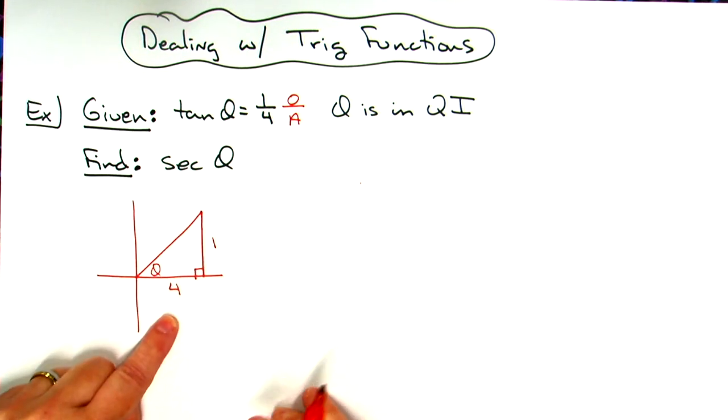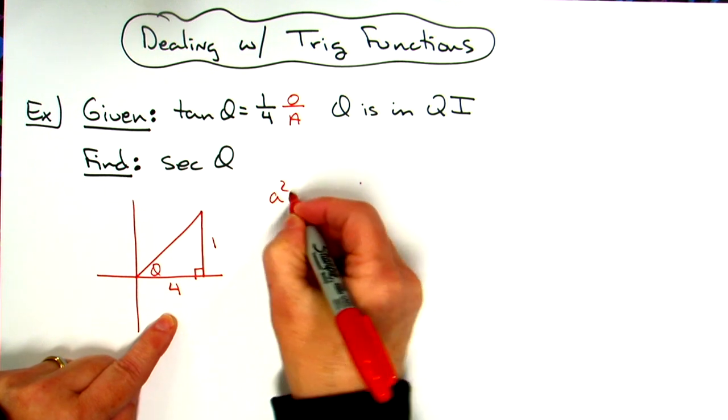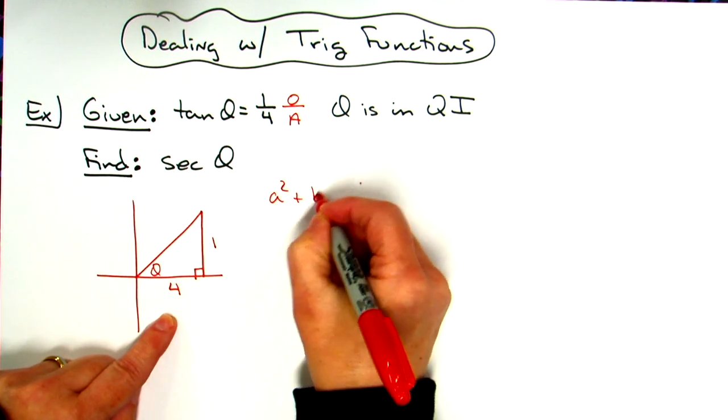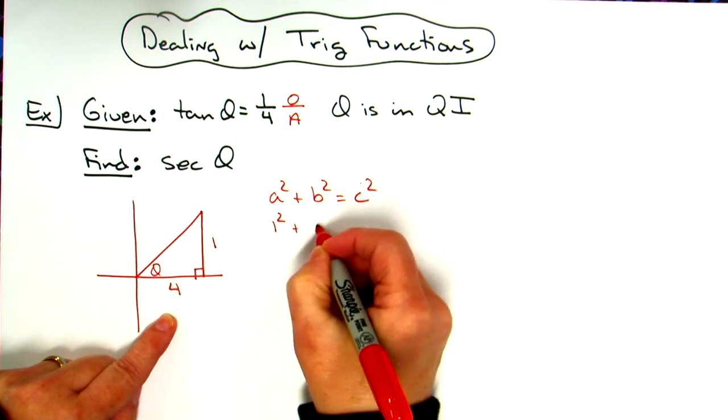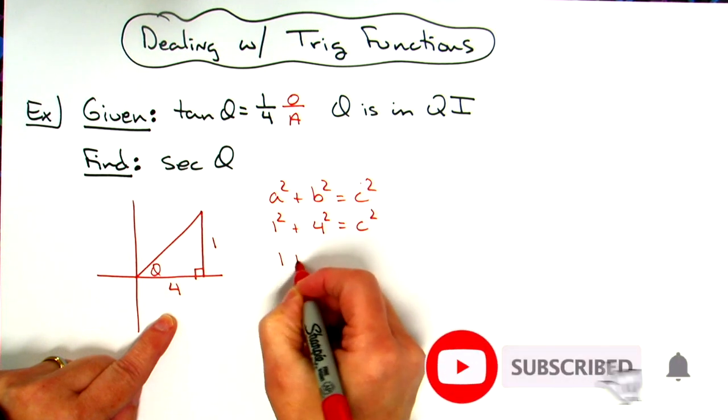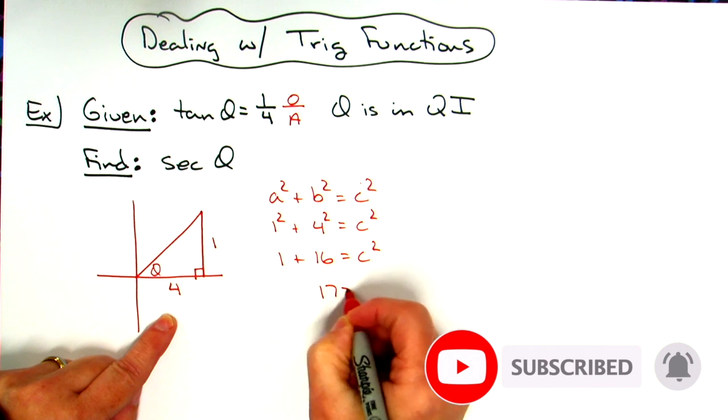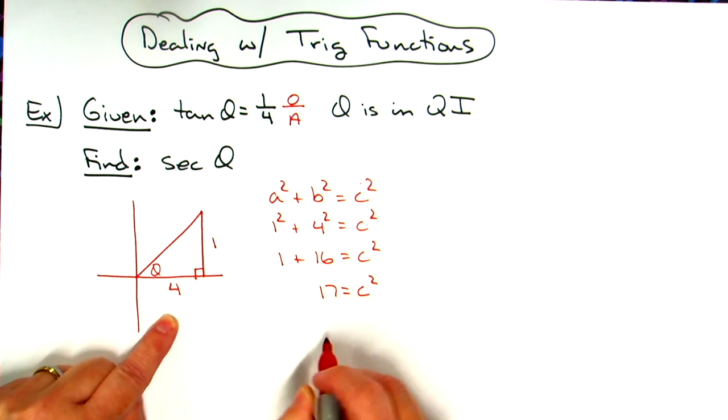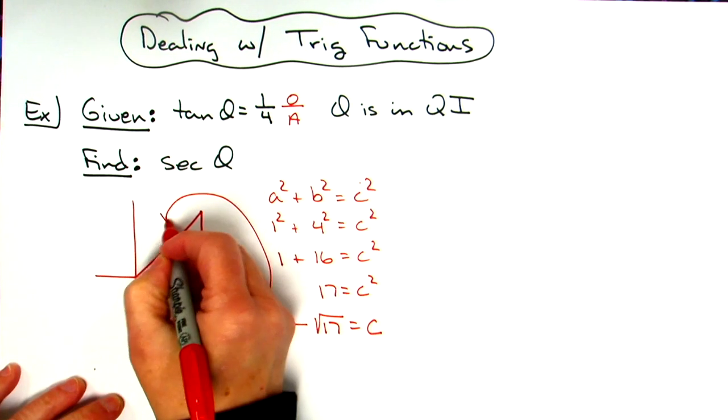Then you could do just good old-fashioned a squared plus b squared equals c squared to find that hypotenuse. So a little Pythagorean theorem because I got a right triangle here. So one squared plus four squared equals c squared, one plus 16 equals c squared. So 17 equals c squared. That means my hypotenuse is going to be the square root of 17. So then we could plug that in there.